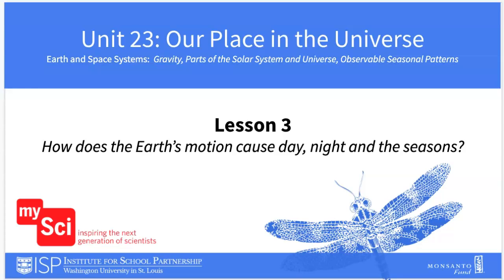Students will develop and use a model to explain how the Earth-Sun relationship causes day and night and the year. They will figure out that Earth's counterclockwise rotation on its axis causes patterns of day and night. The Earth's counterclockwise revolution around the Sun causes yearly seasonal patterns.